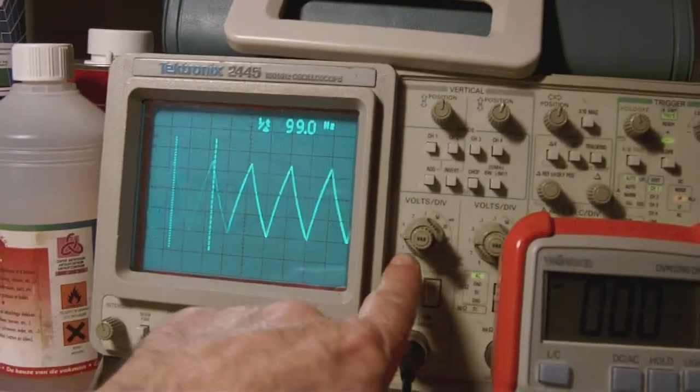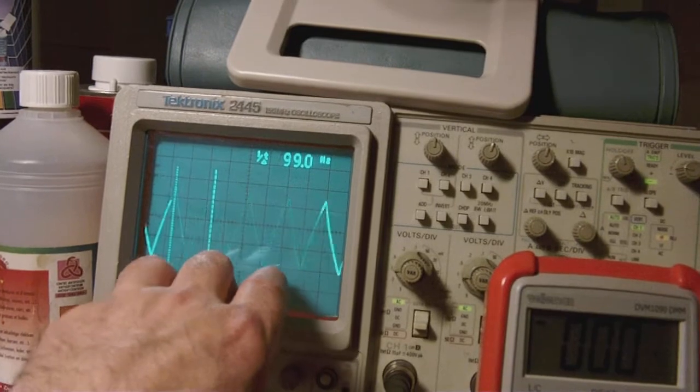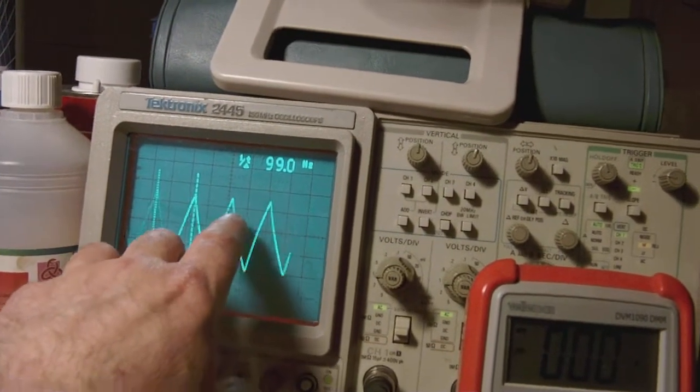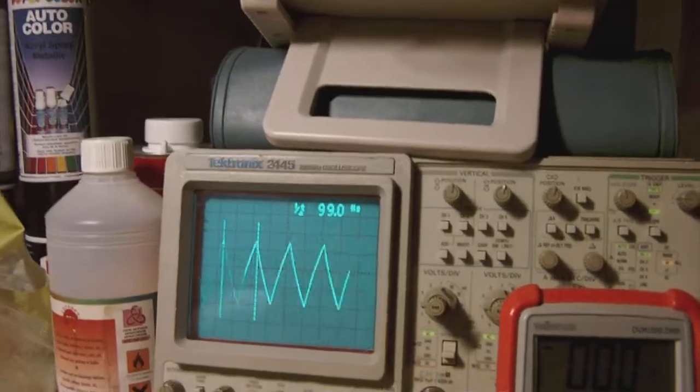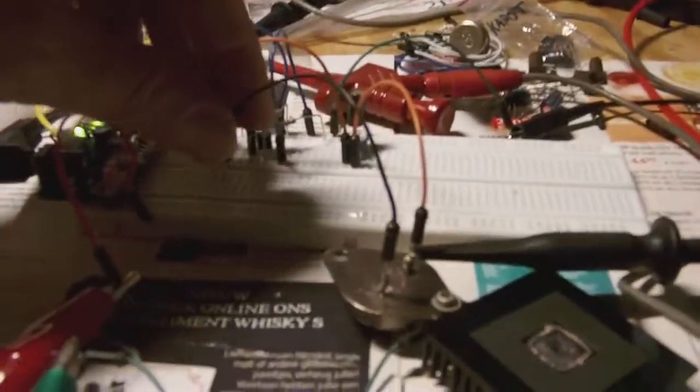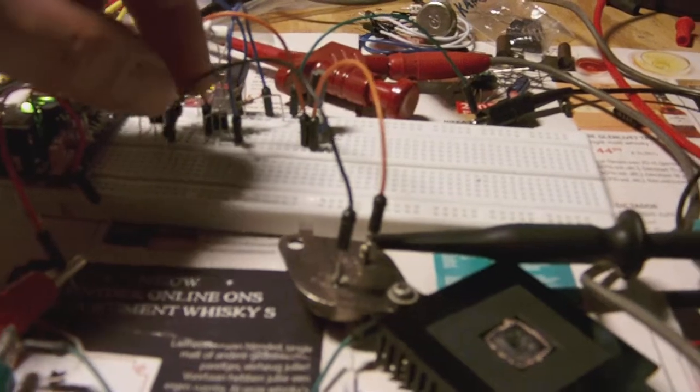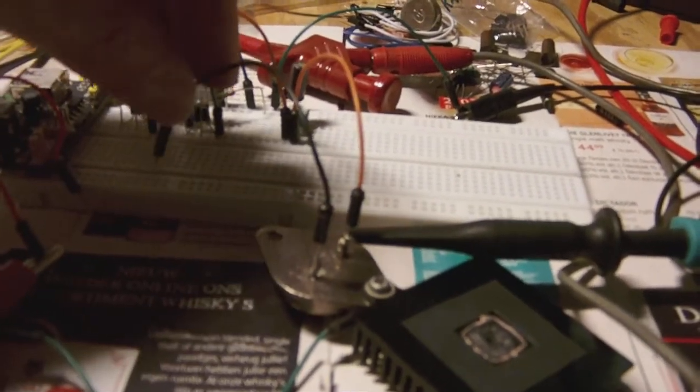As you can see the oscilloscope is set to one volt per division and there's one, two, three, three and a half divisions. As you can see if I put the power transistor back into the circuit, hang on let me switch it off.